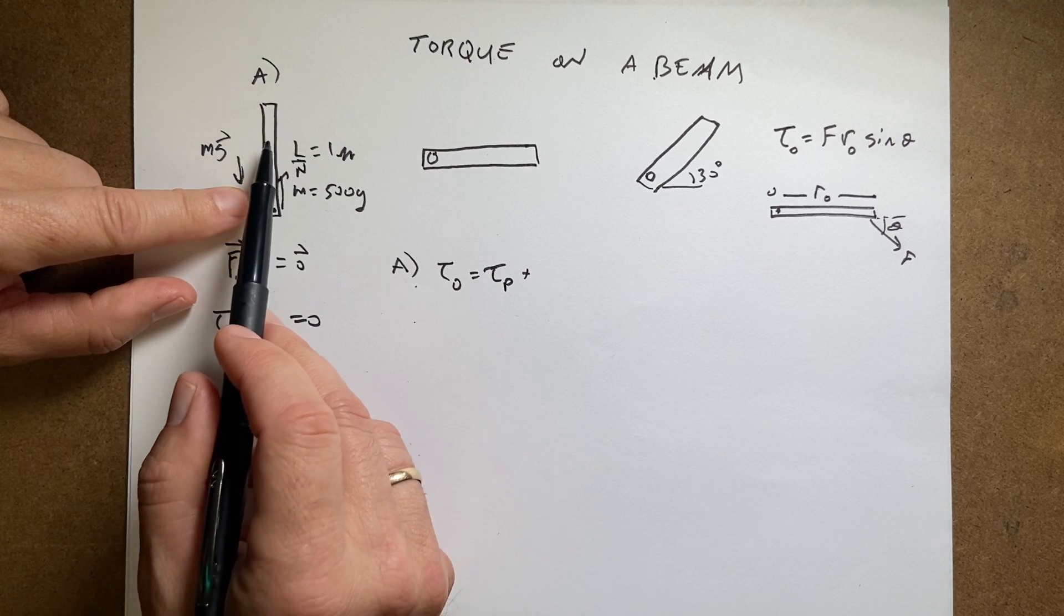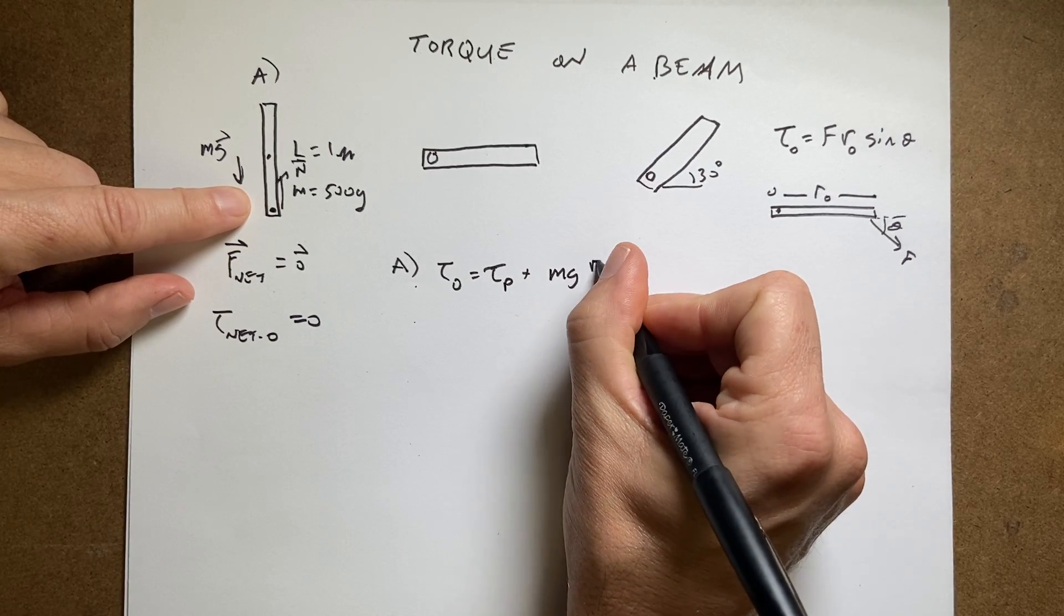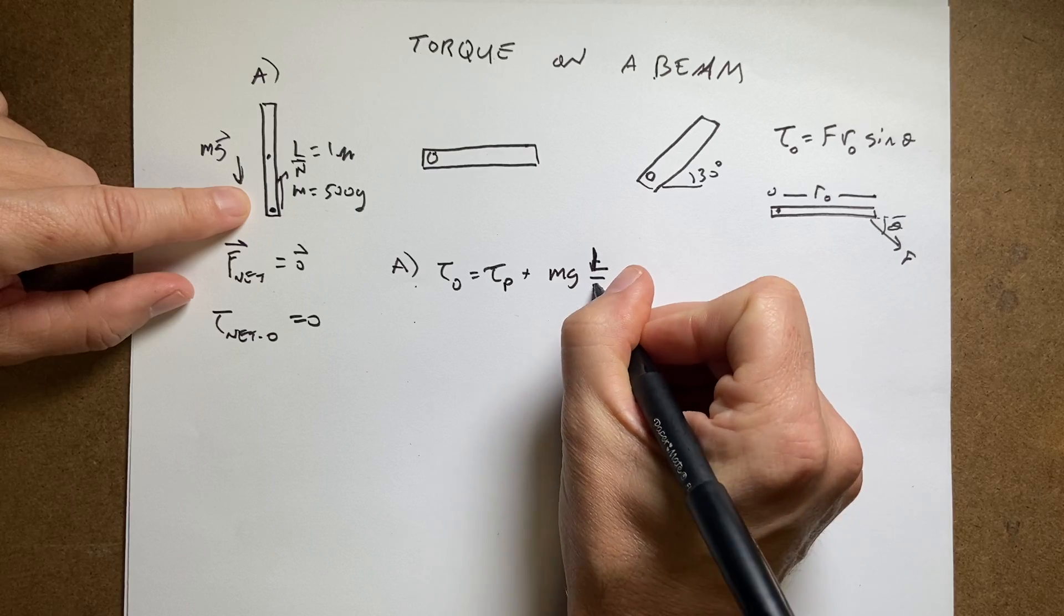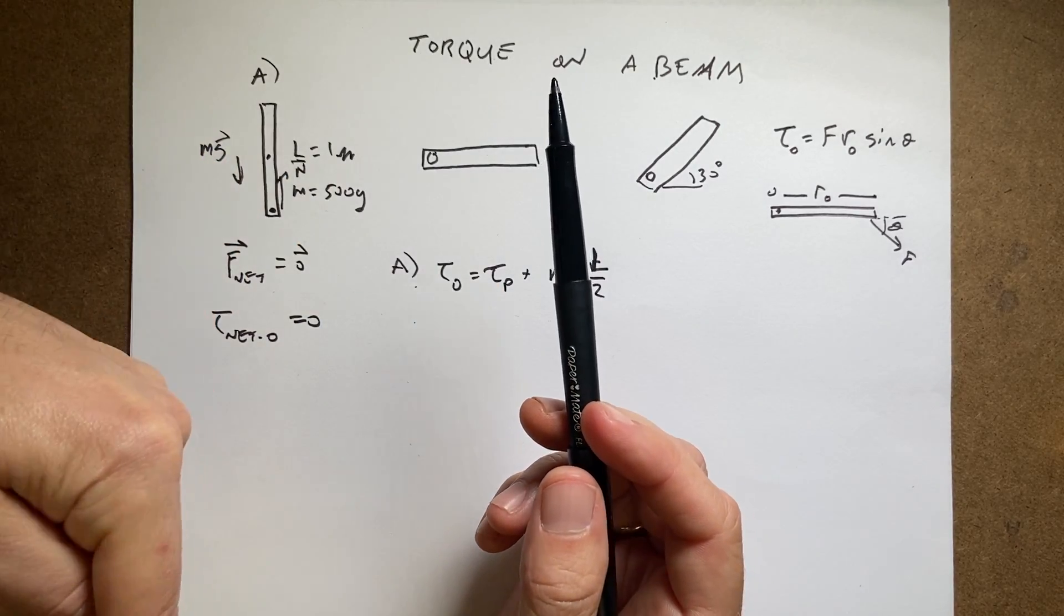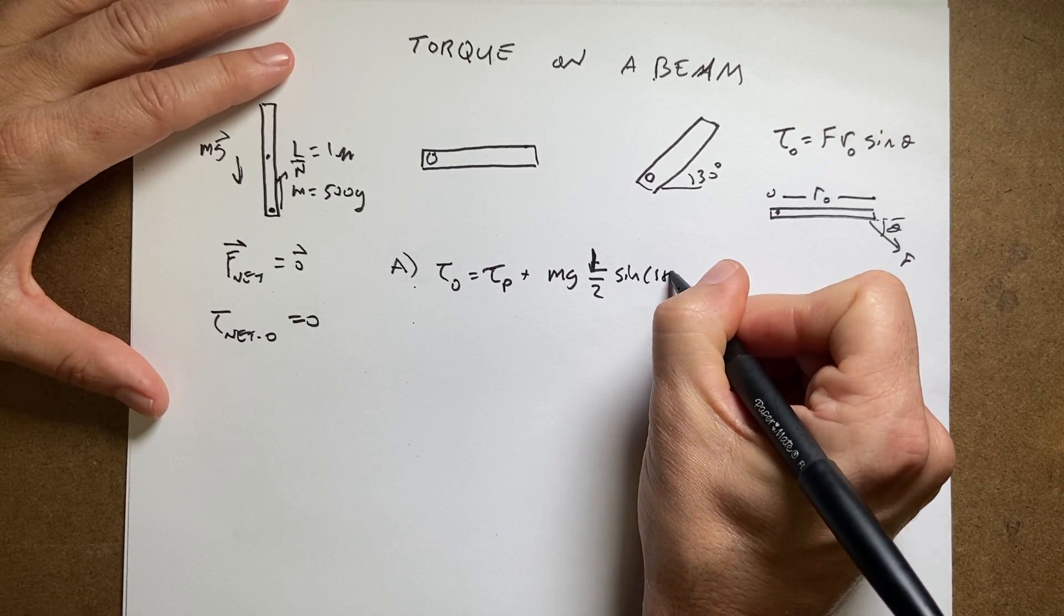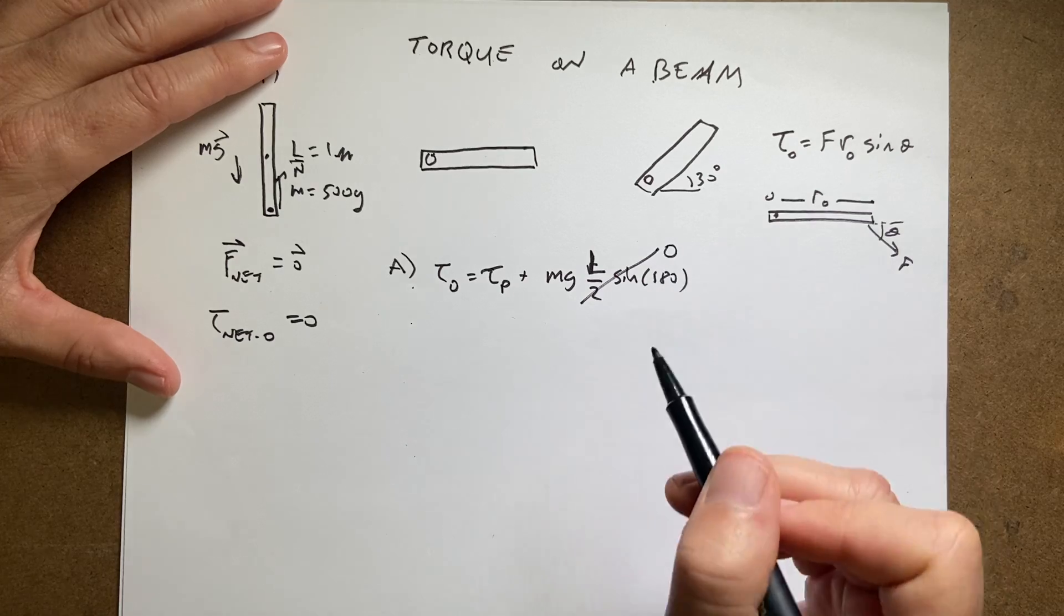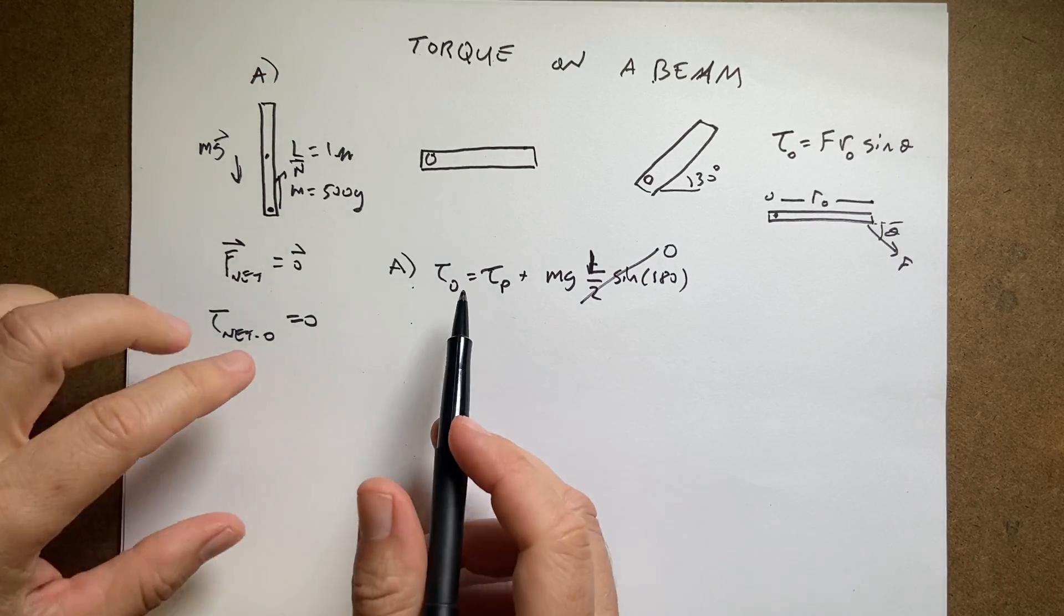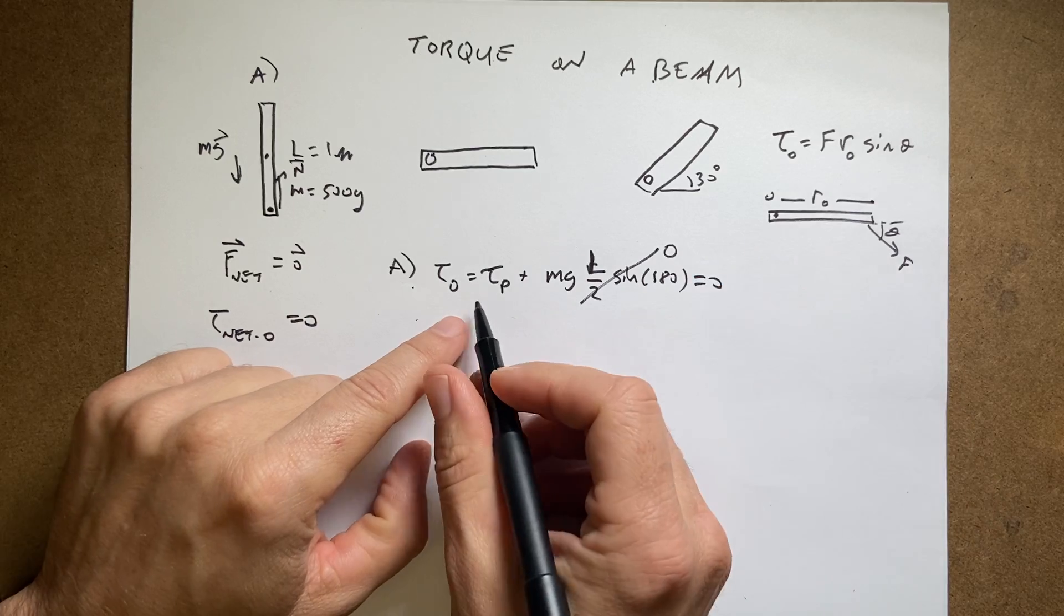So here I have r is going to be L over 2, the force is mg, then I have L over 2. Now what's the angle between that? Well, r is that way, F is that way, so the angle is 180 degrees. And what's the sine of 180? Zero. So there you go. So that means if this torque is zero and I want these to add up to zero, then the torque due to the pin has to be zero: τ_p equals zero.